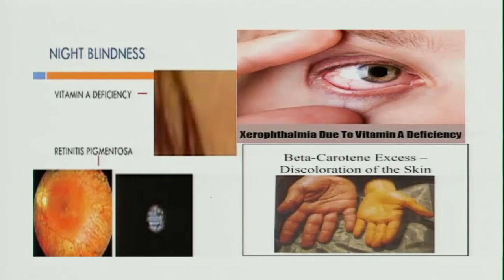This is how xerophthalmia in Vitamin A deficiency looks. Pigmentation of the retina occurs, and when beta carotene is in excess, there is discoloration of skin — the skin becomes yellow in color. This concludes the topic of Vitamin A: its functions, sources, deficiencies, recommendations, and what happens when Vitamin A is in excess. Though required in very small amounts, it is a very important vitamin for various functions.